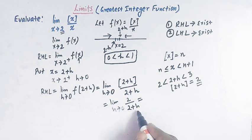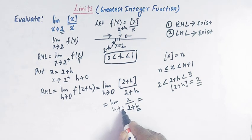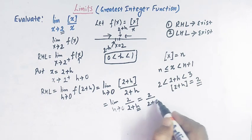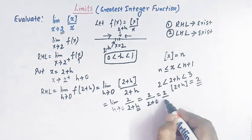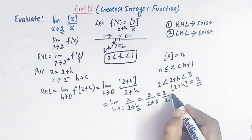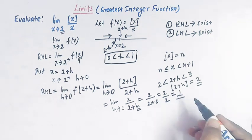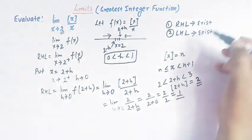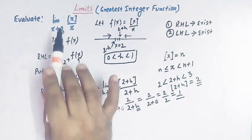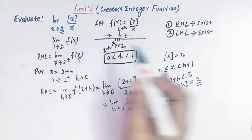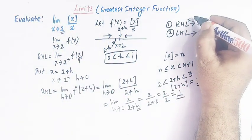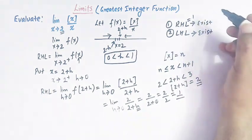Now we can replace h by 0, giving us 2 over (2 + 0), which is 2 over 2, equal to 1. So the right-hand limit of this function when x tends to 2 is equal to 1.